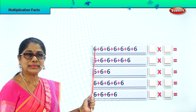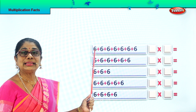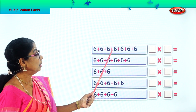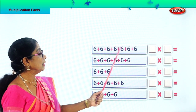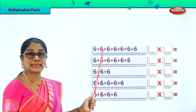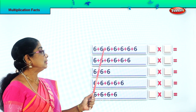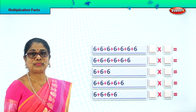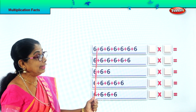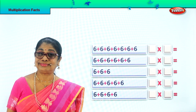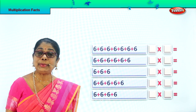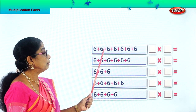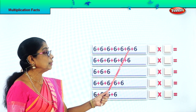Let's count it. How many times? 1, 2, 3, 4, 5, 6, 7. So we have 6 plus 6 plus 6 plus 6 plus 6 plus 6 plus 6. Multiplication is repeated addition. Here you have 6 plus 6 plus 6 plus 6 plus 6 plus 6.